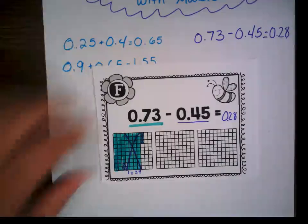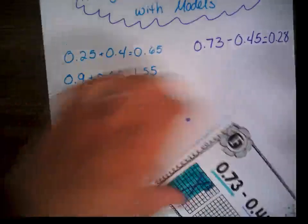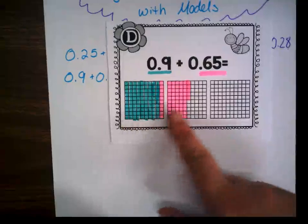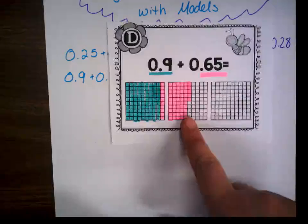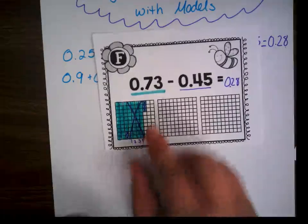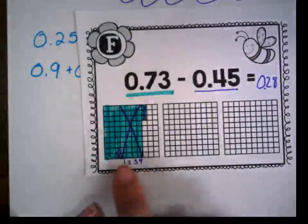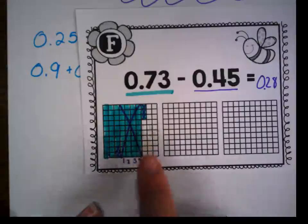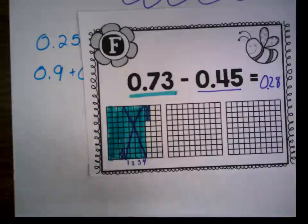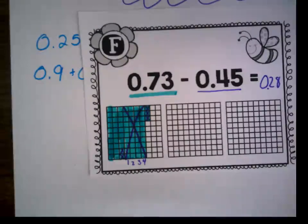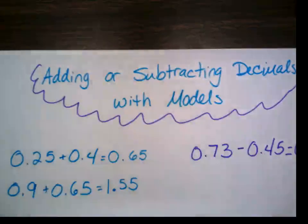So to review: when we're adding decimals together, we can combine them together on the same base ten model. When we subtract them, we put our full entire amount and then take away as many as we need to. We can see I've got my five hundredths taken away, my four tenths taken away, and then we're left with two tenths and eight hundredths. That is how we go ahead and add or subtract decimals with our base ten models.